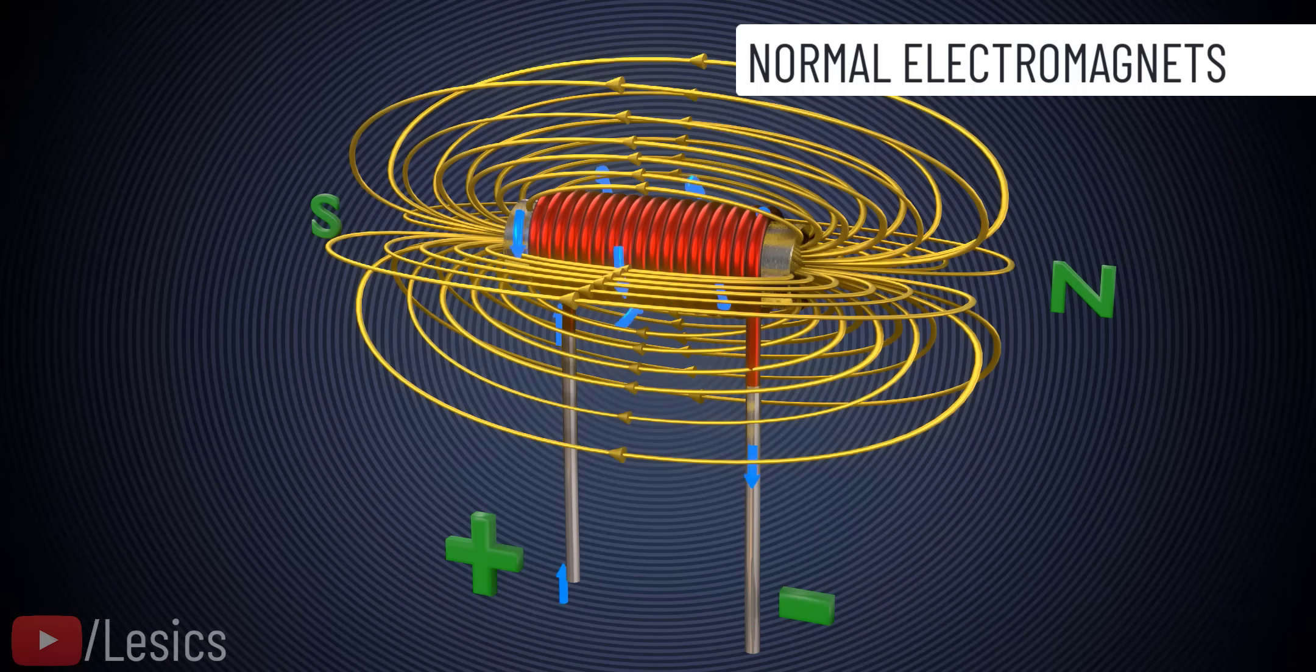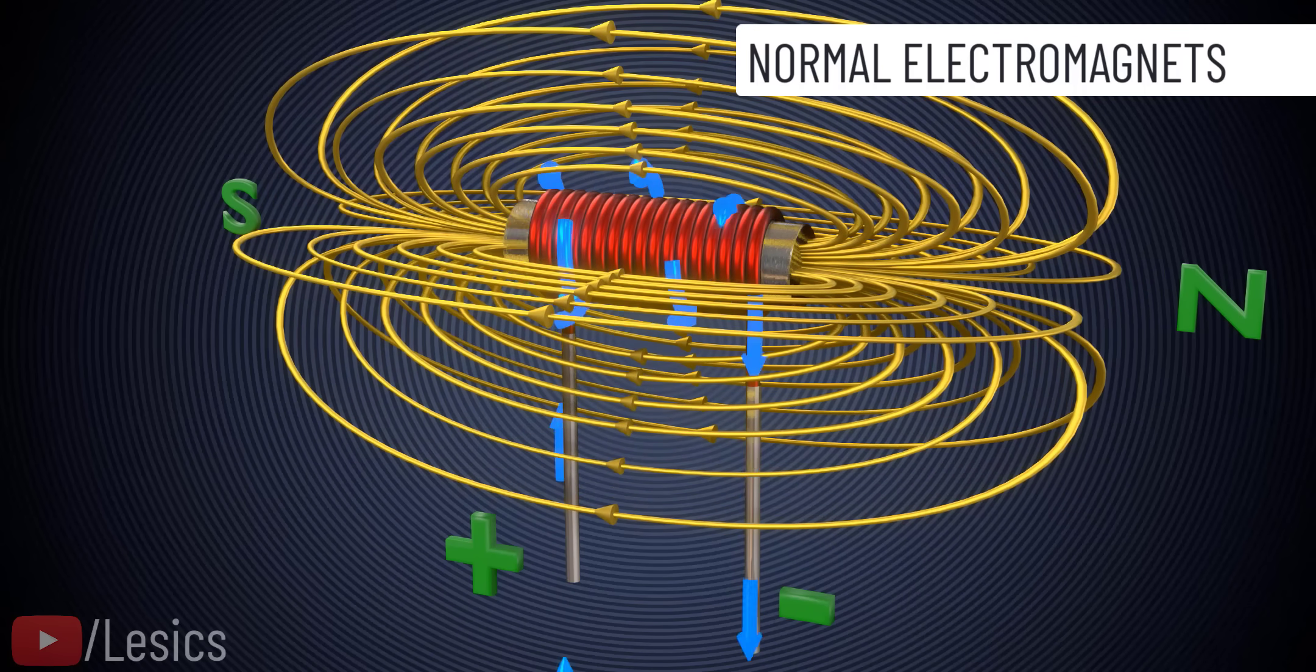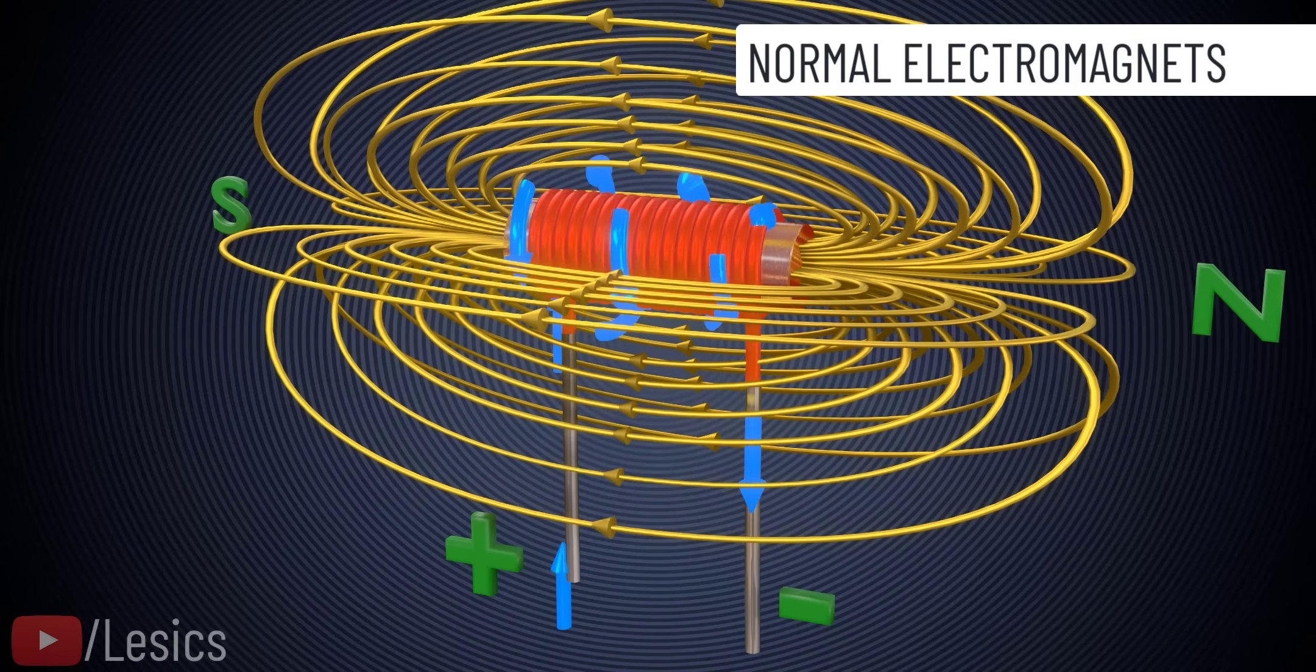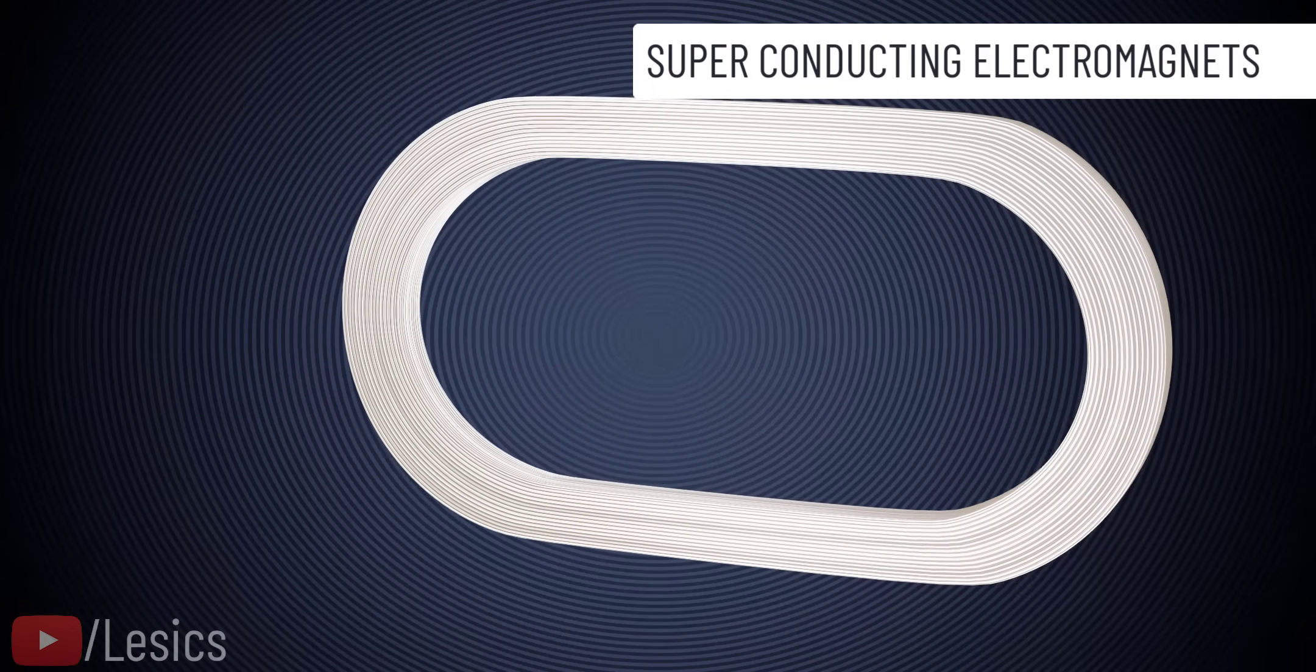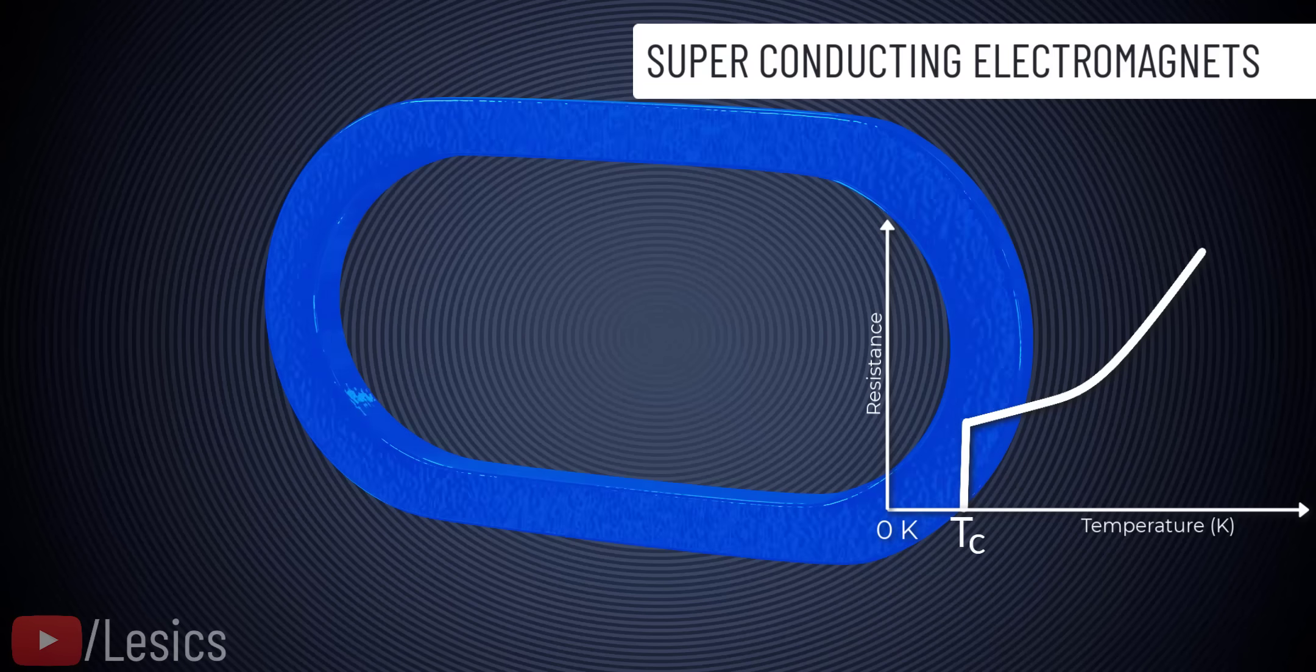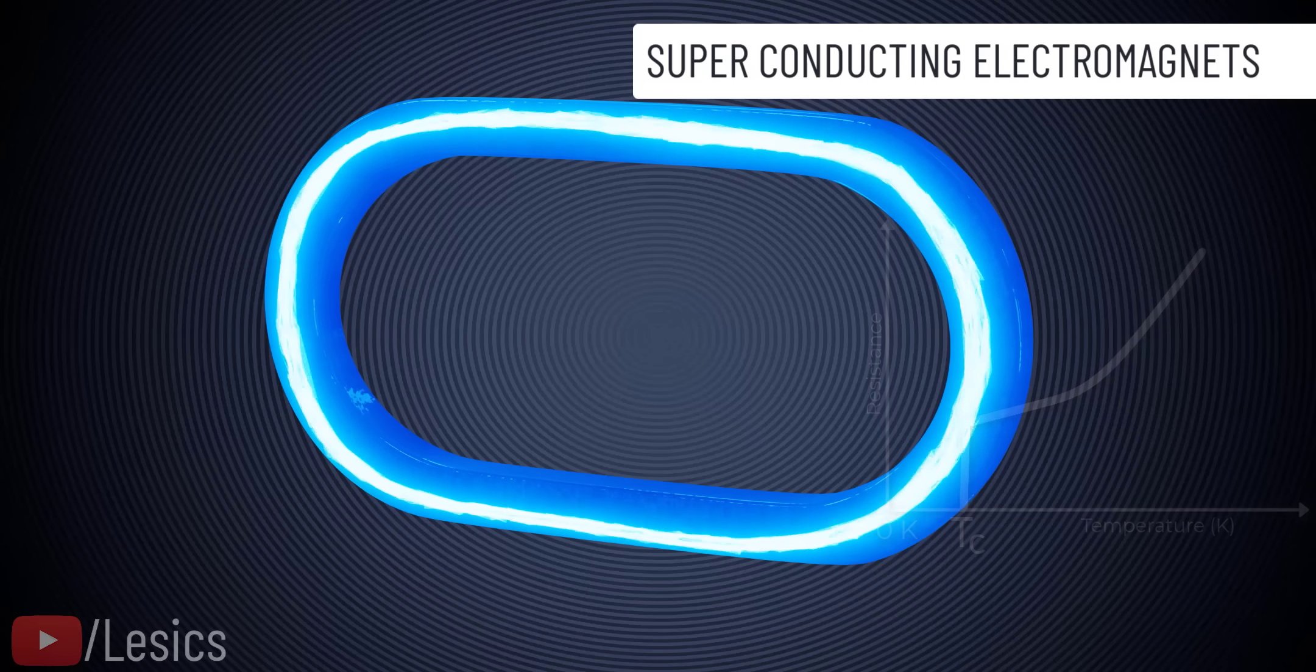Levitating trains require enormously powerful electromagnets. The stronger the magnets, the more lift force and propelling force they have, resulting in higher train speed. A normal electromagnet is not able to increase the current value beyond a certain limit, due to the heating issue. In the superconducting electromagnets, the temperature of the conductor is lowered below a critical limit. After this, the material suddenly produces a huge amount of current flow with zero resistance. That result is exactly what we want.